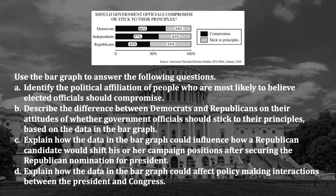The first thing we notice is the bar graph. Start by looking over it. Be sure to read the title, or in this case, the poll question being asked: Should government officials compromise or stick to their principles? And you can see the responses by Democrats, Independents, and Republicans.